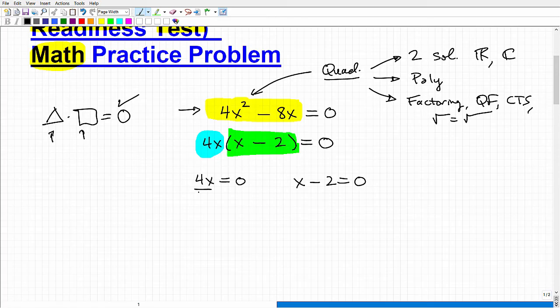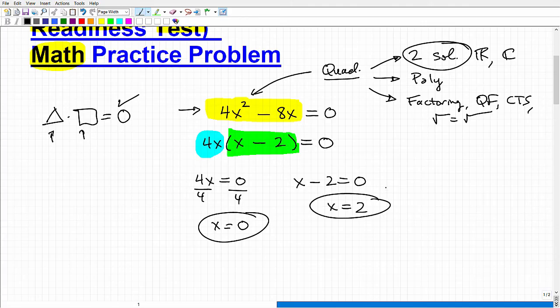Now we can solve each. So 4x equals 0. This is pretty easy. We're going to get x equals 0. So that's one of my solutions. Remember, this quadratic equation has two solutions. And over here, I'm going to get x equals 2. So these are our two solutions to our quadratic equation, and that is the solution. If you got that right, that's excellent. And if you didn't get this right, but now you're like, oh I remember how to do that, that's good too.